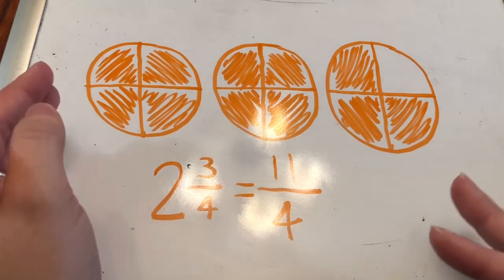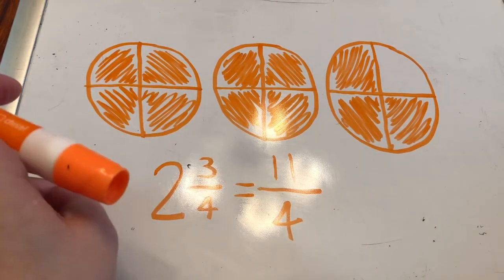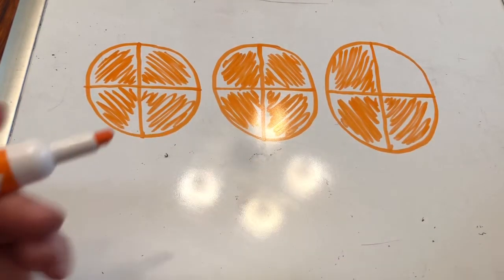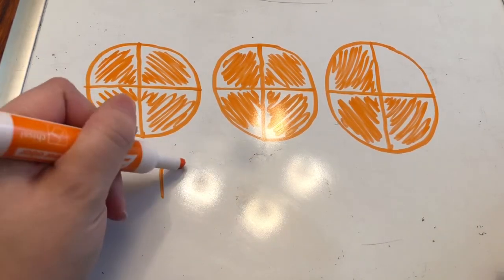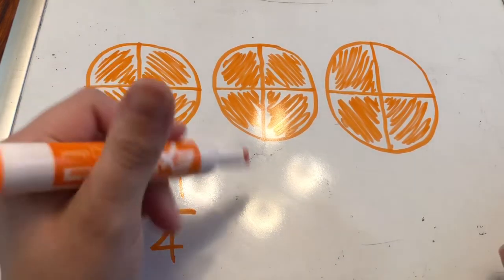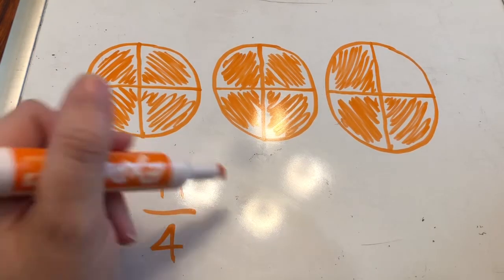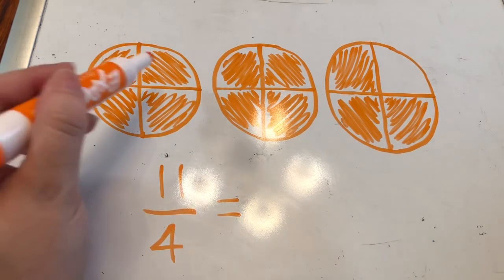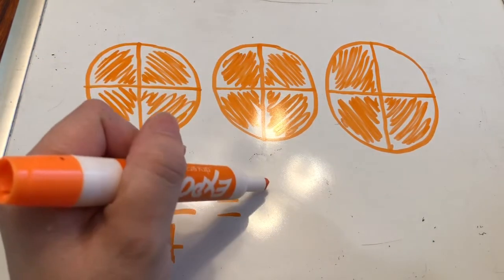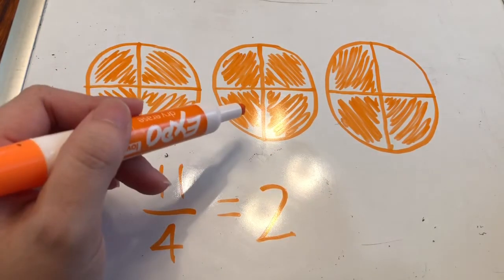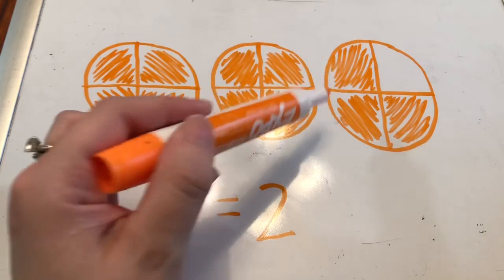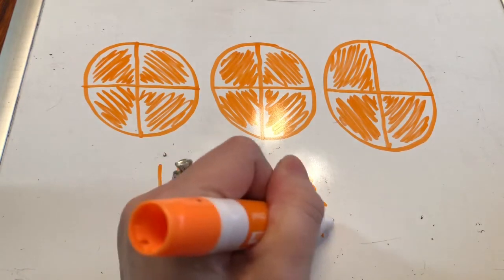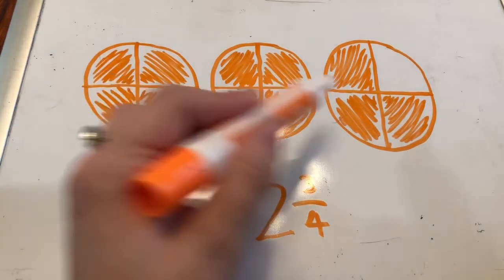Now we'll try it going the other way, from an improper fraction to a mixed number. If it says this is eleven fourths and it wants me to change it to a mixed number, I look and see how many wholes there are: one, two. There are two wholes colored in. And then one fourth, two fourths, three fourths — three fourths colored in. So there are two wholes and three fourths colored in.